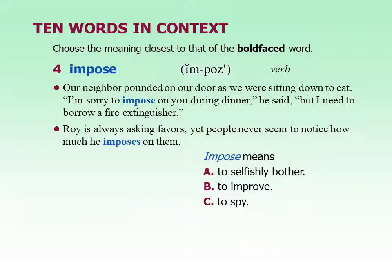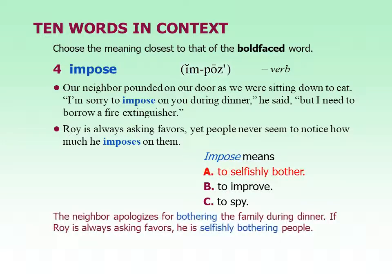The next one is impose. It's also a verb. Our neighbor pounded on our door as we were sitting down to eat: 'I'm sorry to impose on you during dinner, but I need to borrow a fire extinguisher.' Roy is always asking for favors, yet people never seem to notice how much he imposes on them. This word means to selfishly bother. If we're going to ask for a favor, we might say 'I'm sorry to impose on you, but could you help me?' Or: 'He always imposes on me by asking me to babysit, watch his dog, give him a ride to school.' It's 'impose on' and then a person, or simply 'I'm sorry to impose.'